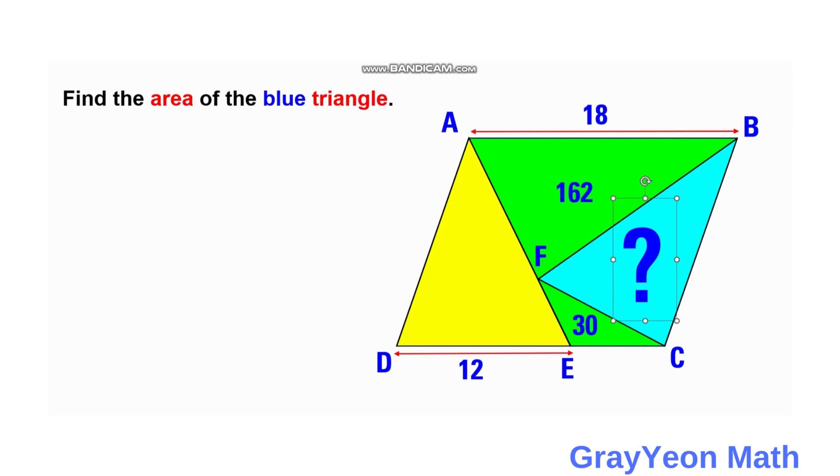Okay, so let us first focus on this base of this parallelogram. So on the top you can see that the length is 18 units, and also for the bottom it should be also 18 units. But DE is only 12, so CE should become 6 units. So this becomes 6.